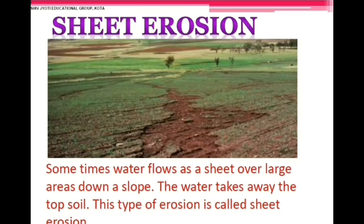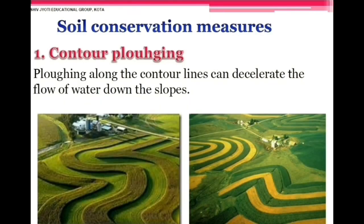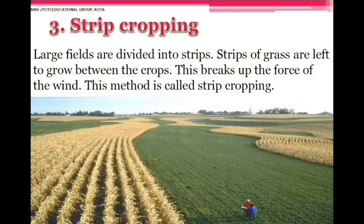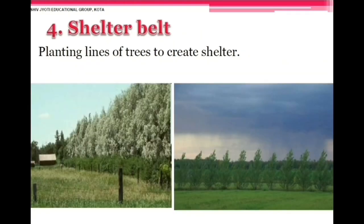In sheet erosion, water flows as a sheet over large areas down a slope and takes away the topsoil. Soil conservation measures include: contour plowing along contour lines to decelerate water flow down slopes; terrace farming where steps are cut on slopes to restrict soil erosion; strip cropping where large fields are divided into strips with grasses left to grow between crops to break up wind force; and shelter belt planting of lines of trees to create shelter.